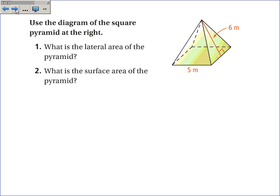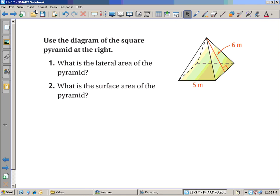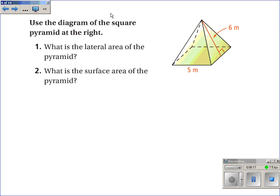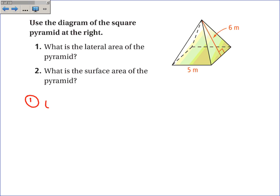Just to recap, this is a square pyramid. The lateral area is one-half PL. And the perimeter of the base, let's see here, it's 5 plus 5 plus 5 plus 5 or 20.